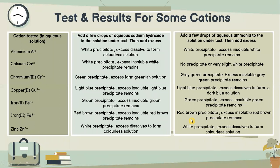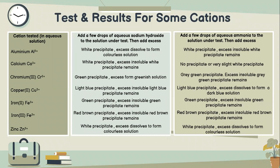Test and result for some cations. For aluminum Al3+: add a few drops of aqueous sodium hydroxide to the solution under test, then add excess — white precipitate forms, excess dissolves to form a colorless solution. Add a few drops of aqueous ammonia to the solution under test, then add excess — white precipitate forms, excess insoluble white precipitate will remain.